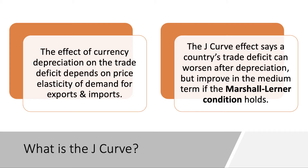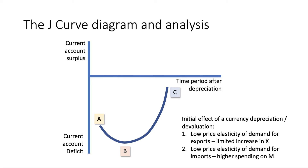The deficit may then improve in the medium term if the Marshall-Lerner condition holds. Here is the J-curve diagram. On the y-axis we have the current account surplus or deficit, and on the x-axis the time period following a currency depreciation. The key point is that in the short term, depreciation may not necessarily improve the current account. Initially after a depreciation, the current account deficit may worsen from point A to point B.